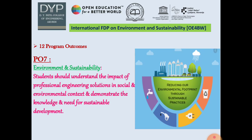This FDP is based on Program Outcome 7 out of the 12 program outcomes defined by the ICTE. PO7 reads for Environment and Sustainability, in which students should understand the impact of professional engineering solutions in social and environmental context and demonstrate the knowledge and need for sustainable development. Looking into this particular program outcome, this FDP has been arranged for the Faculty of Engineering and other faculty also.